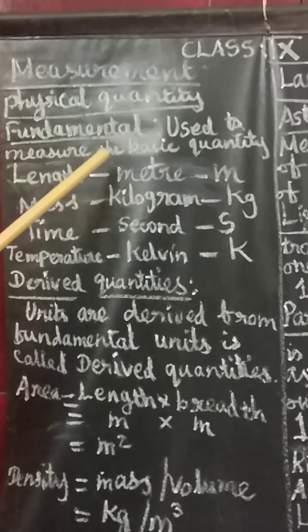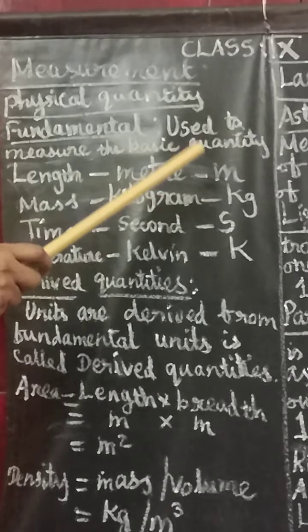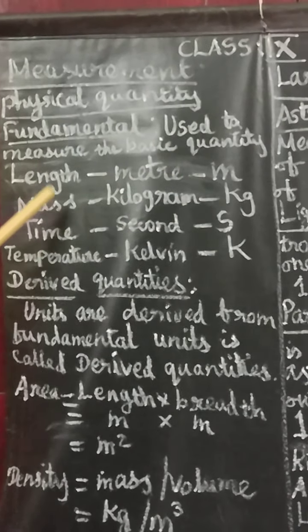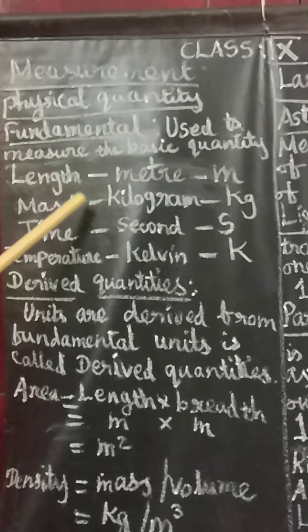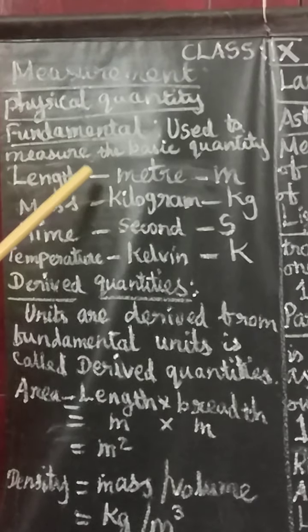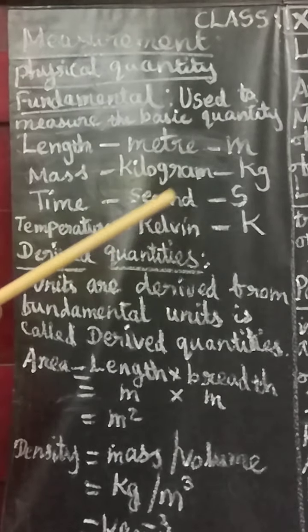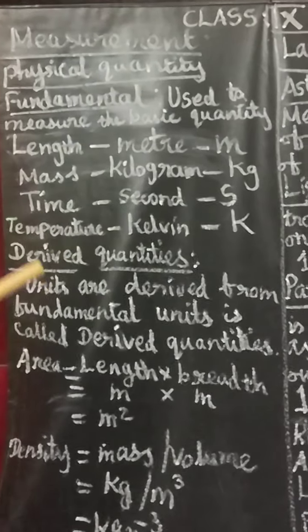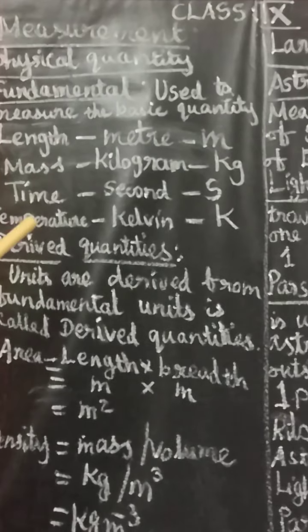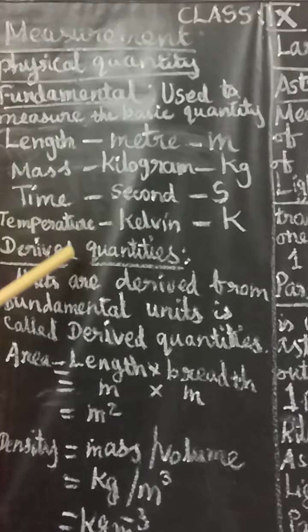To summarize: fundamental quantities are used to measure the basic quantities — length, mass, time, and temperature. These are called fundamental quantities.